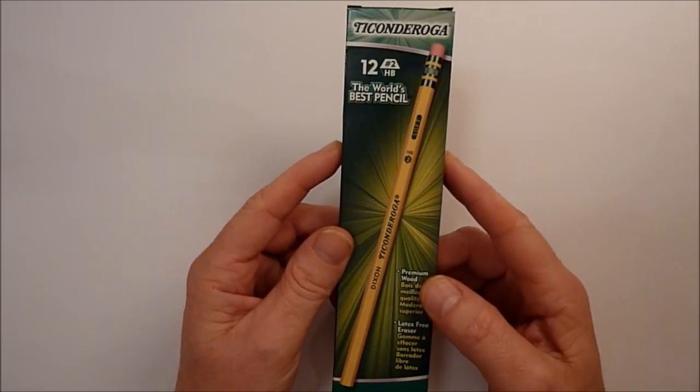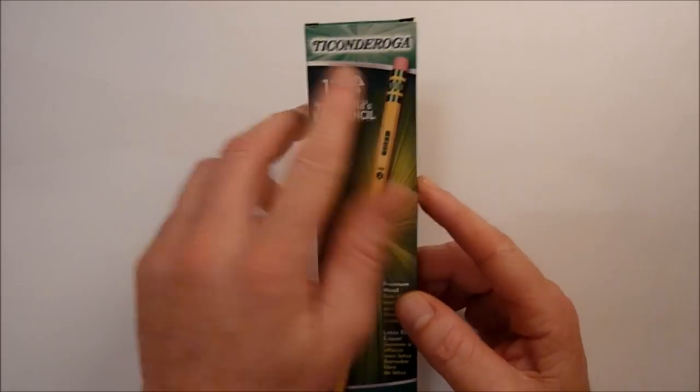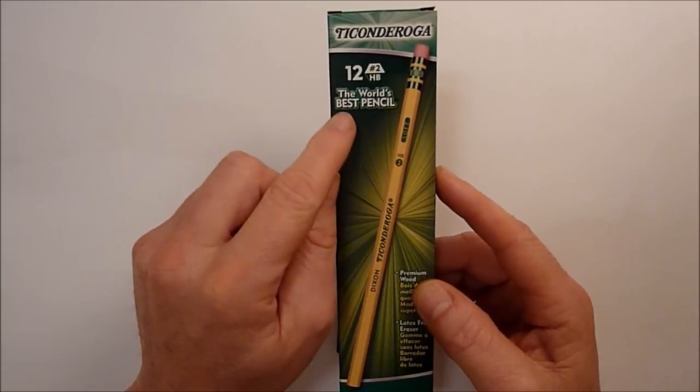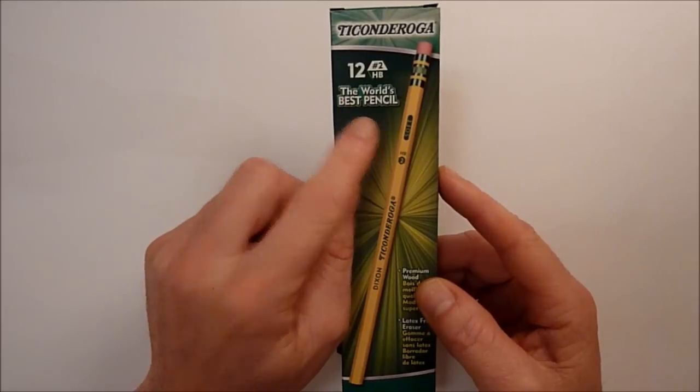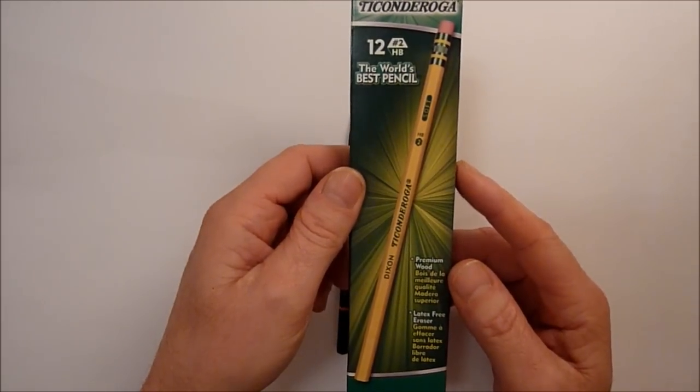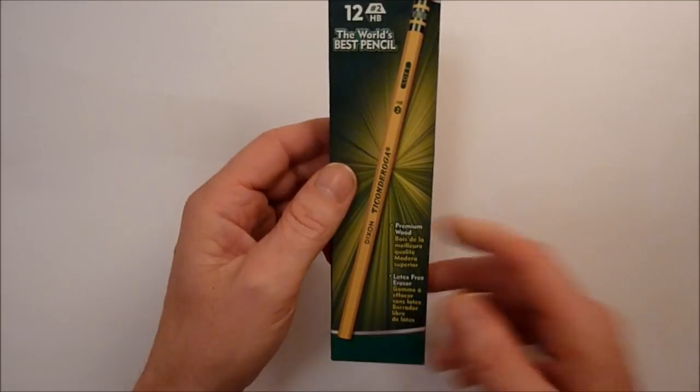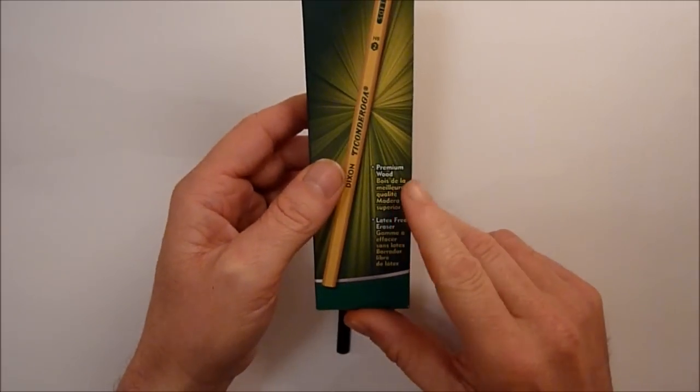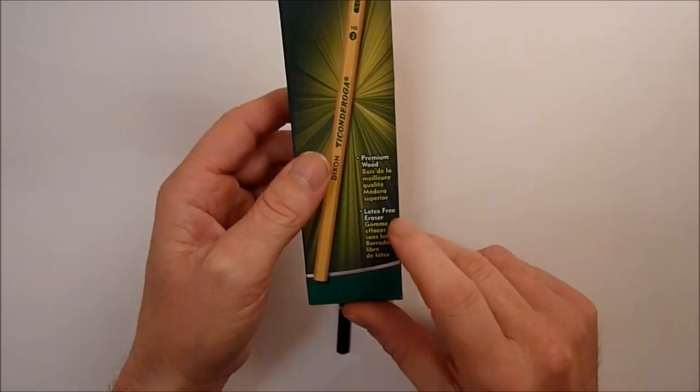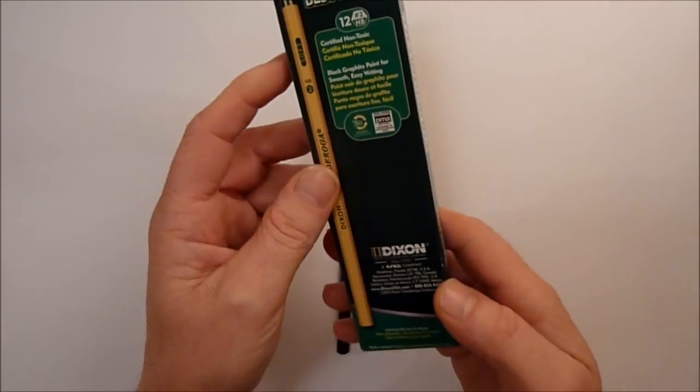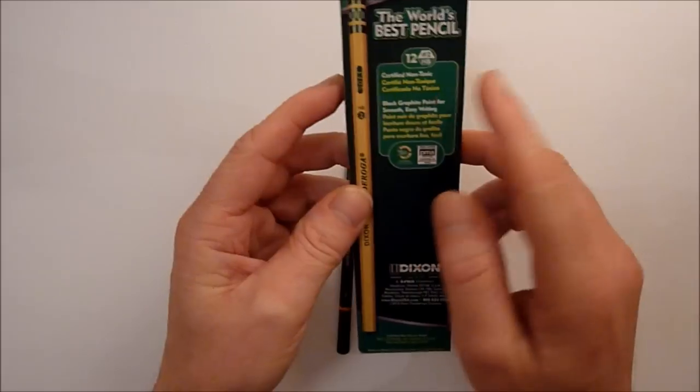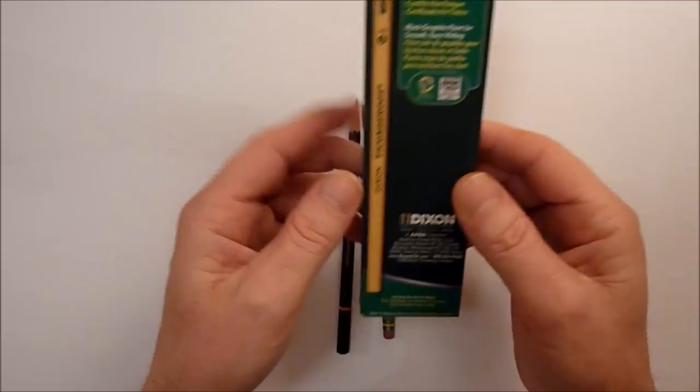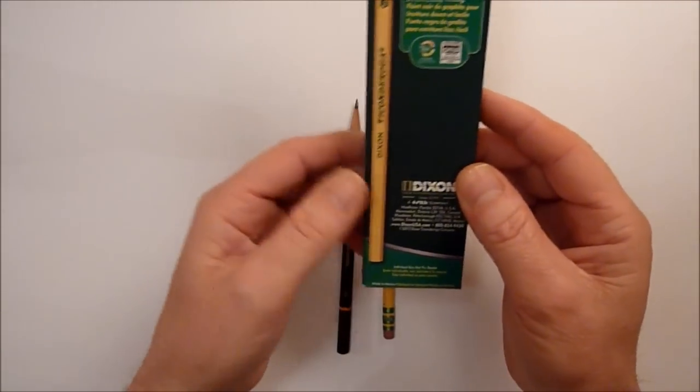And the first thing I noticed was, it says on the box there, Ticonderoga at the top, 12 number two or HB pencils, the world's best pencil. Okay, now that's a bold statement to make isn't it? Okay, so we'll go with that then for now. And it goes on to say premium wood, latex free eraser, turn the box over, certified non-toxic, smooth, easy handwriting, so it ticks all the boxes doesn't it?